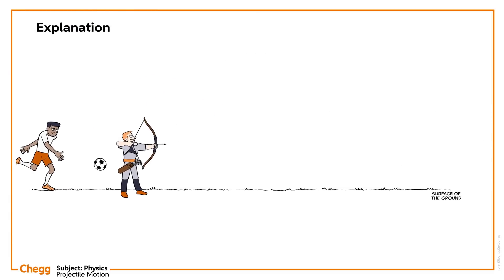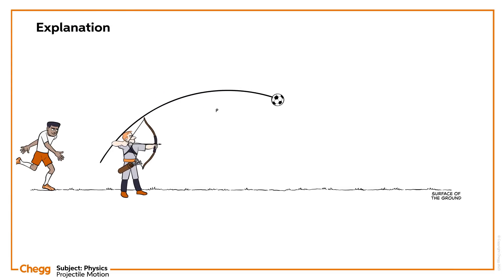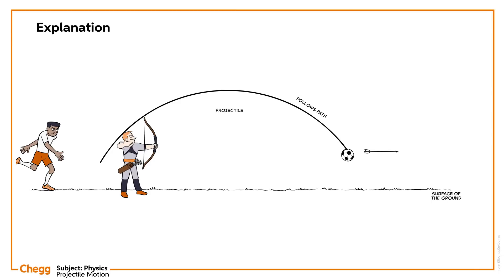An object that is projected with a certain angle relative to the ground is called a projectile. The path followed by the projectile is called the trajectory.